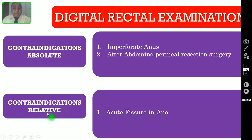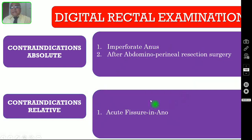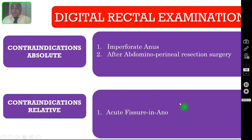So what is the relative contraindication? Whenever your patient is having an acute fissure in ano, you should not do the digital rectal exam because if you try to do it, the patient will experience enormous, very severe pain. So you should not do it in a case of acute fissure in ano.